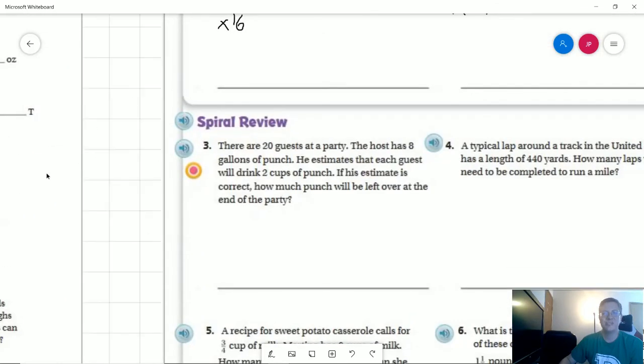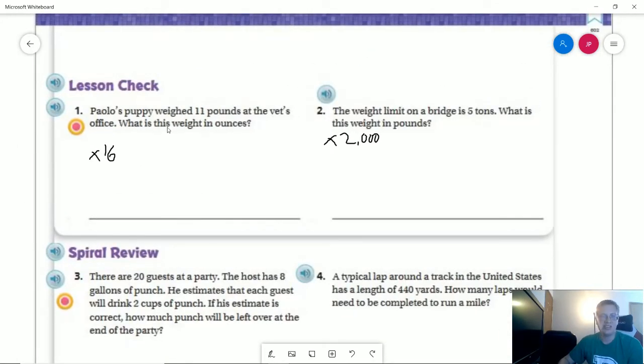Going to the back, we have a puppy that weighed 11 pounds at the vet's office. If we multiply by 16, I can do 10 times 16 to get 160, add another group of 16. That would give me 176 in ounces.